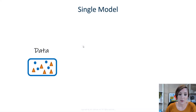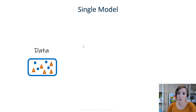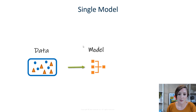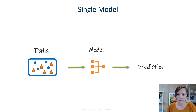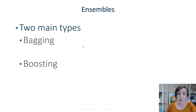First I'm going to start off with a simple example using something that most people in machine learning are familiar with — just using a single model. You start off with your data, take your samples, pass it into your model, and then you get your prediction. So if you're looking to improve your performance using a single model, you can use ensemble methods.